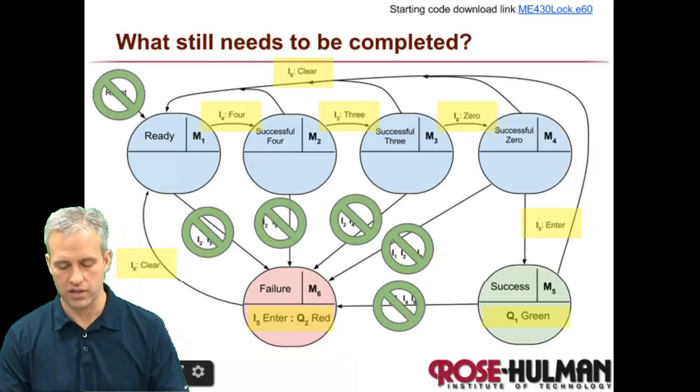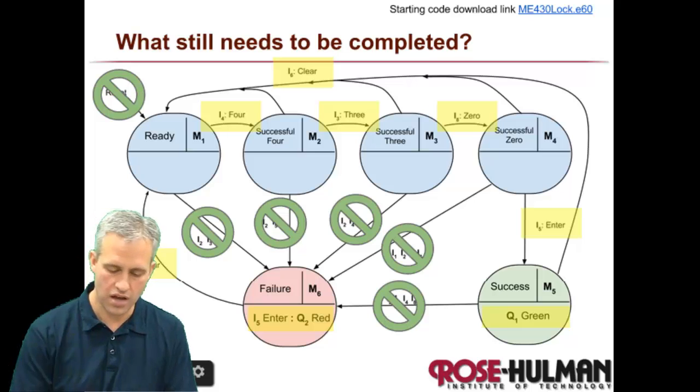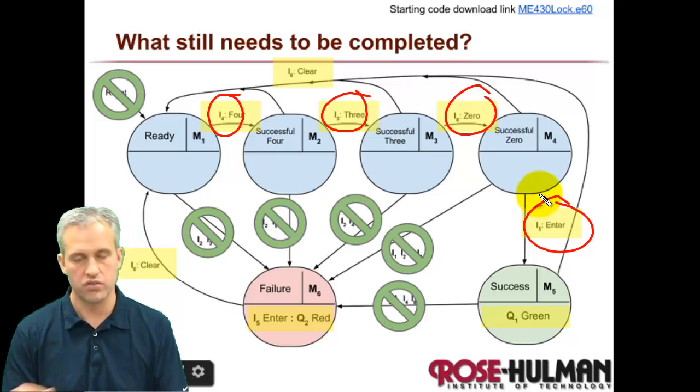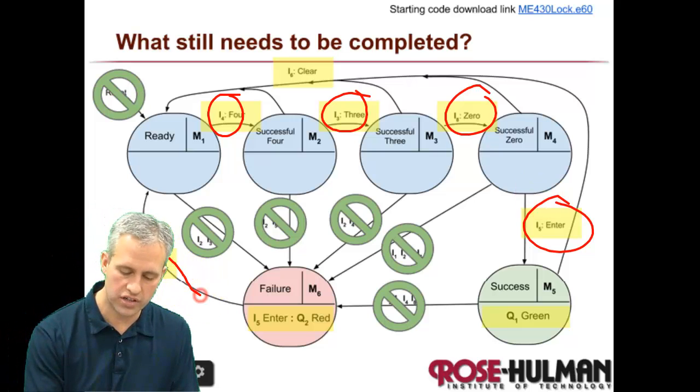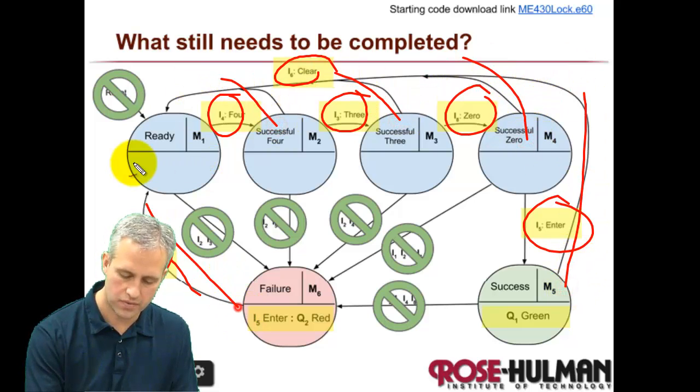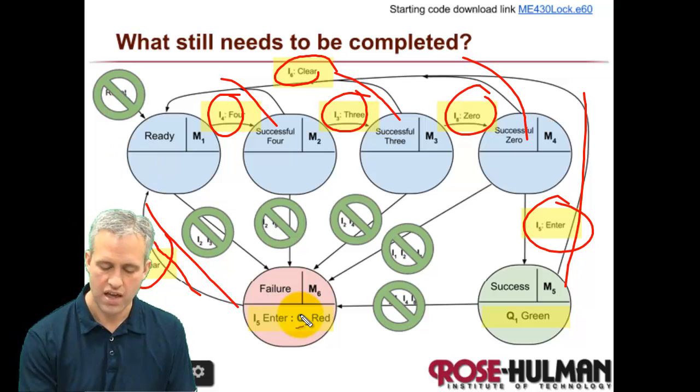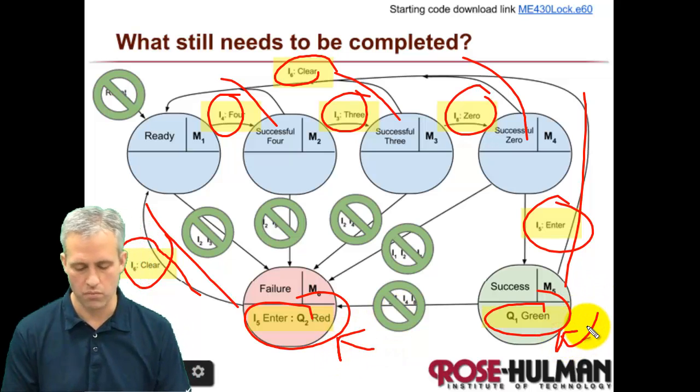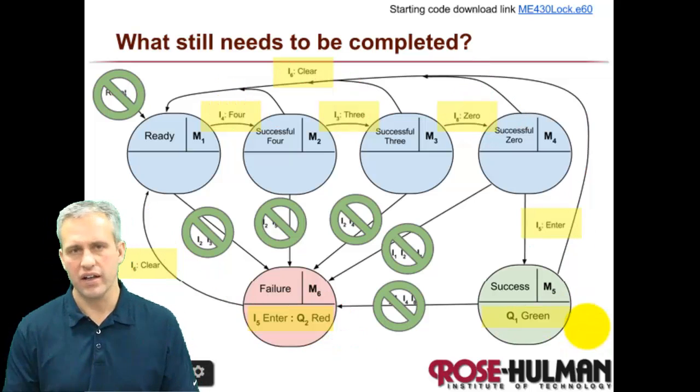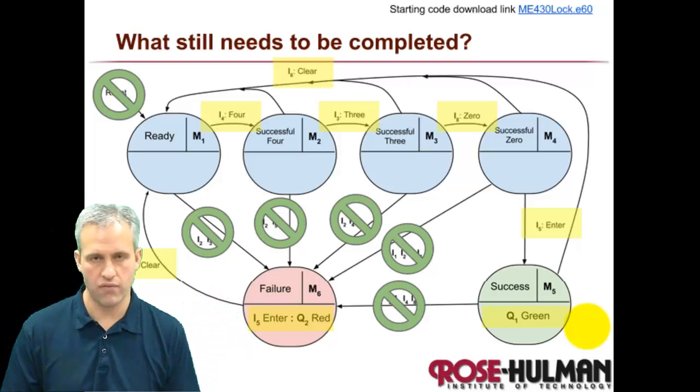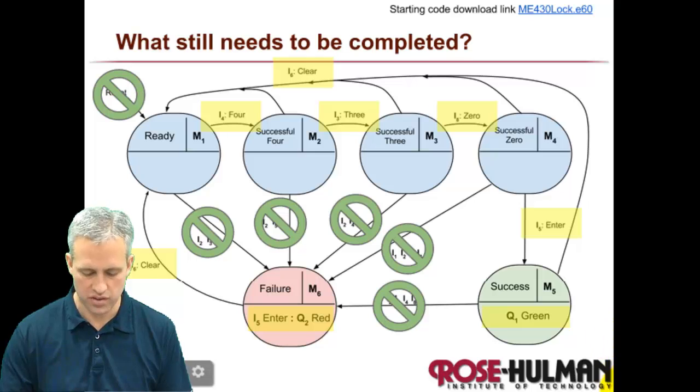So what still needs to be completed, the things that still need to be completed are all of the normal transitions, you know, the four, the three, the zero, and the enter. So you've kind of got to do those. You've got to do the clears. So for every state, right, every state has a clear, which is actually easy to implement, it turns out. And then you've also got to do the two actions. This one is a Mealy action because it depends on inputs, and then this one is a Moore action. I would really like for you to do this one by yourself, right? Because we've given you plenty of experience. This is like where you kind of drive home the message. See if you can actually make this thing work.